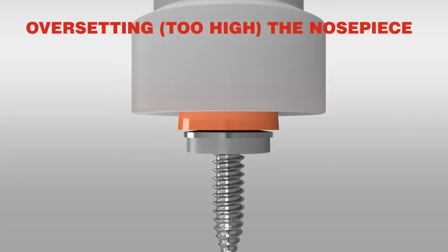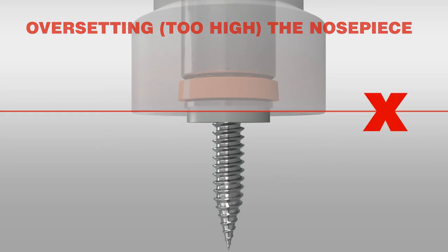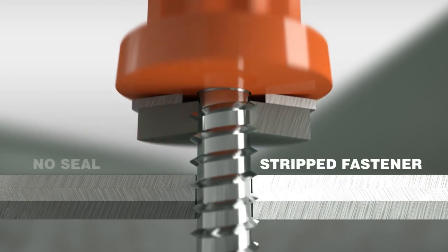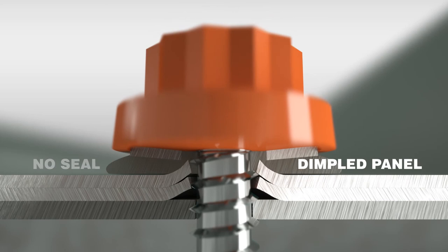Over-setting the nose piece will result in the fastener stripping out. No seal, thread engagement gone. That's because the fastener has drilled beyond optimum compression and to the point there is no material left to engage the fastener thread. Over-setting can result in the fastener stripping out.